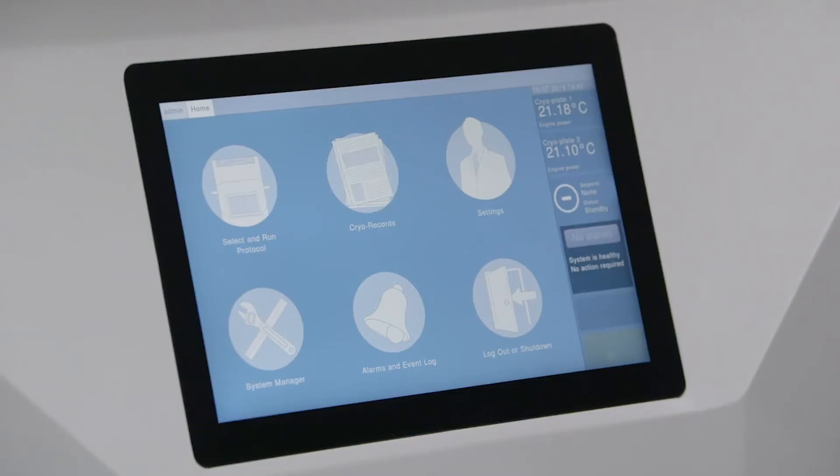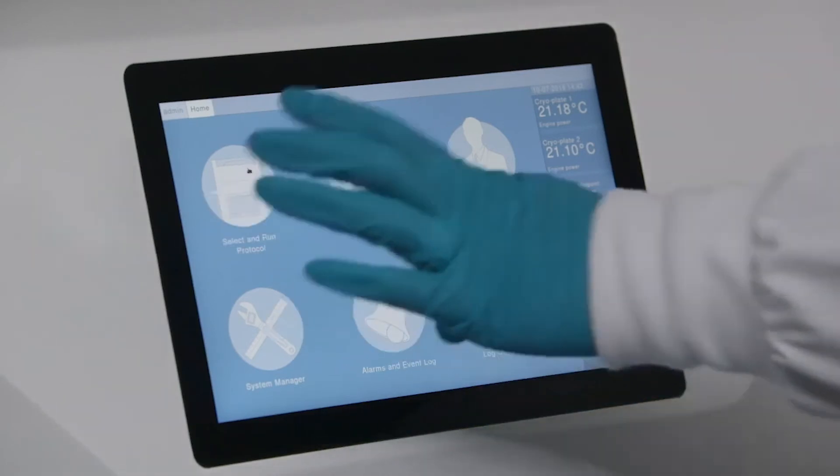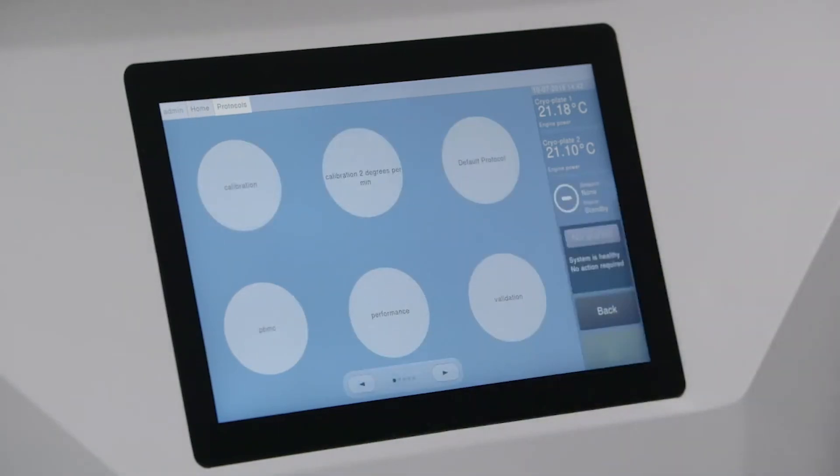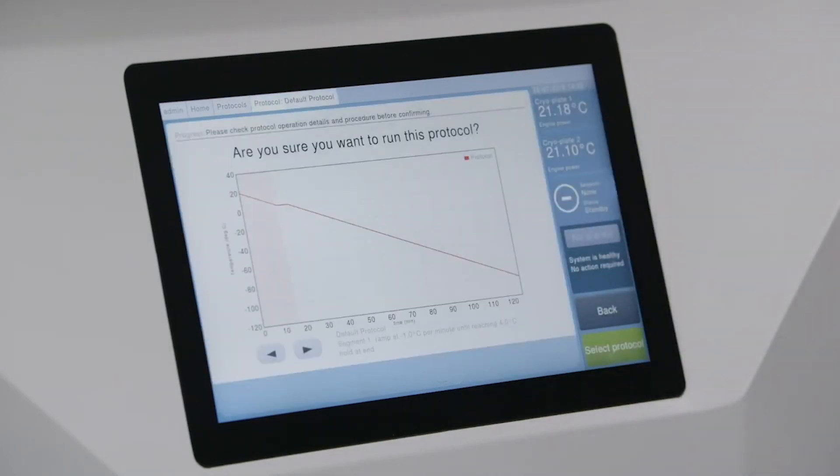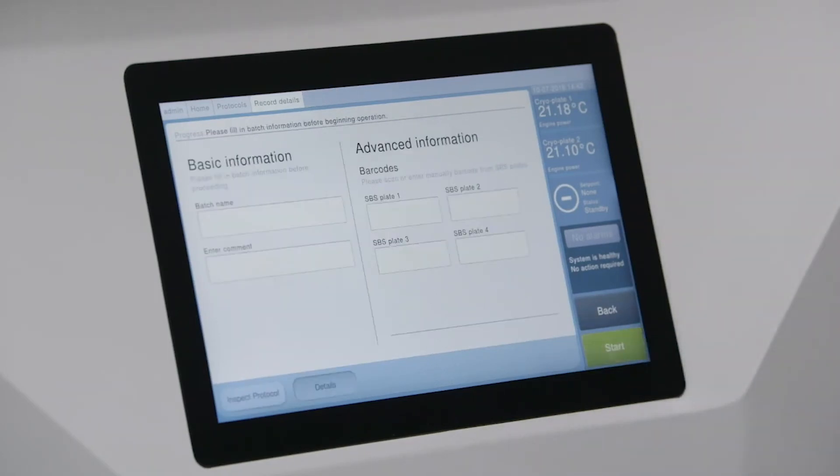From the home menu, click on select and run protocol and it will show you all the protocols previously created. For example, today we're going to use the default protocol. Once we select this protocol, there will be the option to input information pertaining to your samples. You can verify the characteristics of each segment by referencing the inspect protocol information located under the record details.